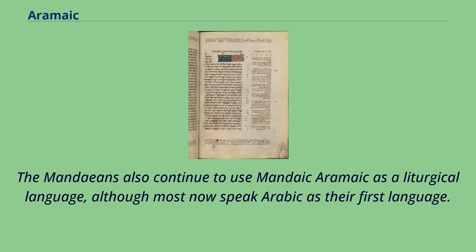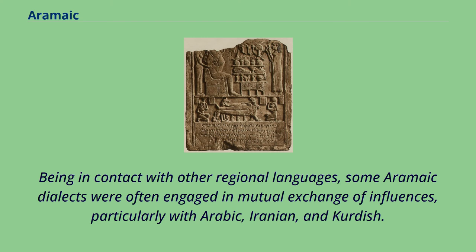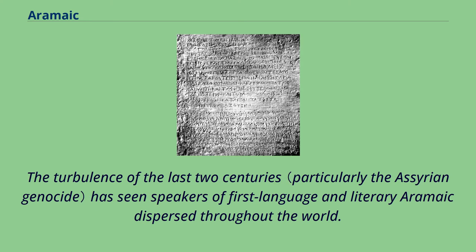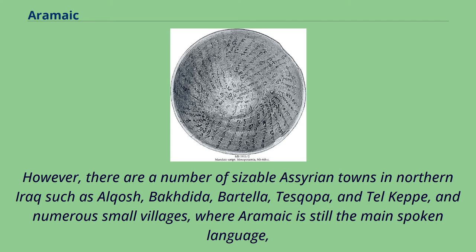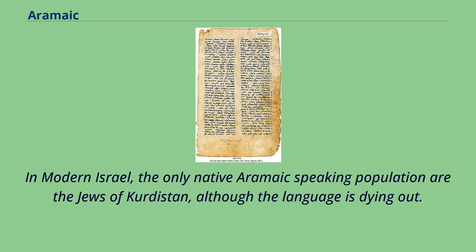There are still a small number of first-language speakers of Western Aramaic varieties in isolated villages in western Syria. Some Aramaic dialects were engaged in mutual exchange of influences, particularly with Arabic, Iranian, and Kurdish. There are sizable Assyrian towns in northern Iraq such as Al-Kash, Bikdida, Bartela, Teskopah, and Telkep, where Aramaic is still the main spoken language. Many large cities also have Assyrian Aramaic-speaking communities, particularly Mosul, Erbil, Kirkuk, Dohuk, and Al-Hasaka. In modern Israel, the only native Aramaic-speaking population are the Jews of Kurdistan, although the language is dying out. However, Aramaic is also experiencing a revival among Maronites in Israel and Jish.